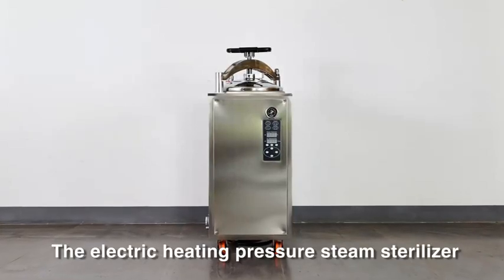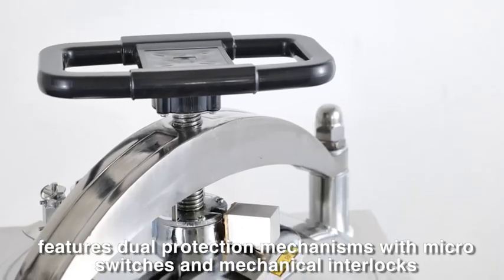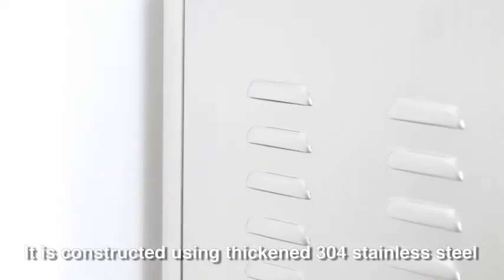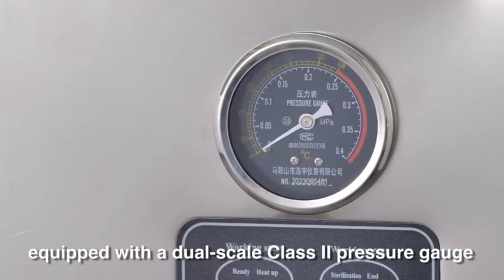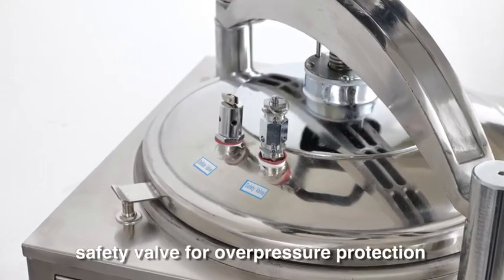The Electric Heating Pressure Steam Sterilizer features steel protection mechanisms with micro switches and mechanical interlocks. It is constructed using thickened 304 stainless steel, equipped with dual scale class 2 pressure gauge, and safety valve for overpressure protection.